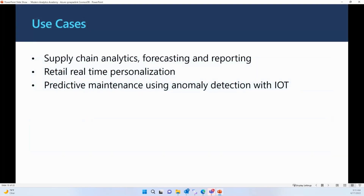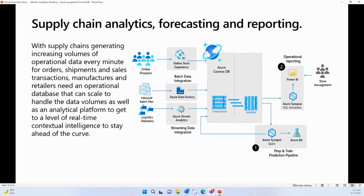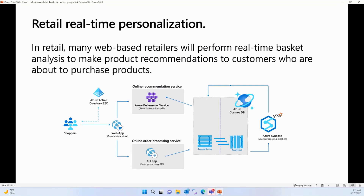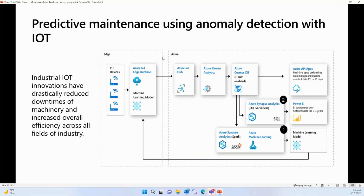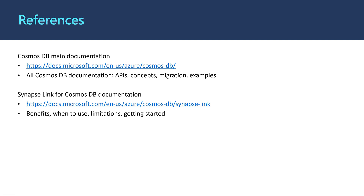Let's look at some use cases for Synapse Link for Cosmos DB. In supply chain industries, where supply chain systems generate large volumes of data every minute, manufacturers and retailers need systems that can handle operational data as well as run near real-time analytics to stay ahead. In retail, retailers want to run real-time basket analysis. In healthcare and manufacturing, organizations want to run predictive maintenance using anomaly detection with IoT. Please visit the reference links for a better understanding.